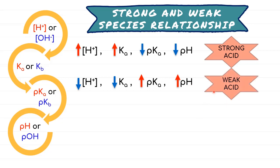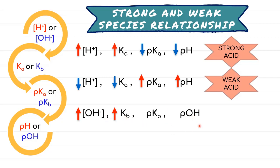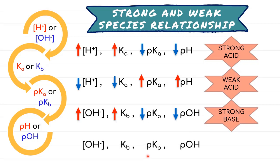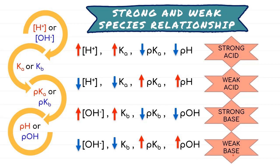If we look at OH− concentration, the information usually leads to base. High concentration of OH− means high Kb value; therefore their pKb and pOH will be low — hence strong base. Conversely, low concentration of OH− means low Kb value, so pKb and pOH will be high, indicating weak base.